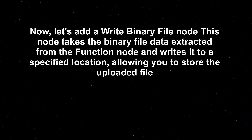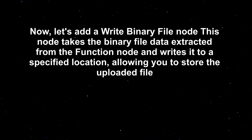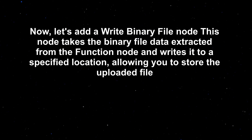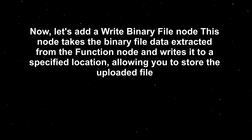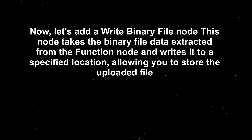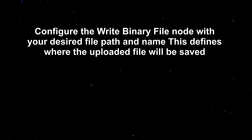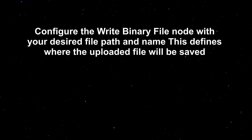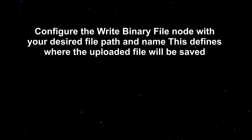Now, let's add a Write Binary File node. This node takes the binary file data extracted from the function node and writes it to a specified location, allowing you to store the uploaded file. Configure the Write Binary File node with your desired file path and name — this defines where the uploaded file will be saved.